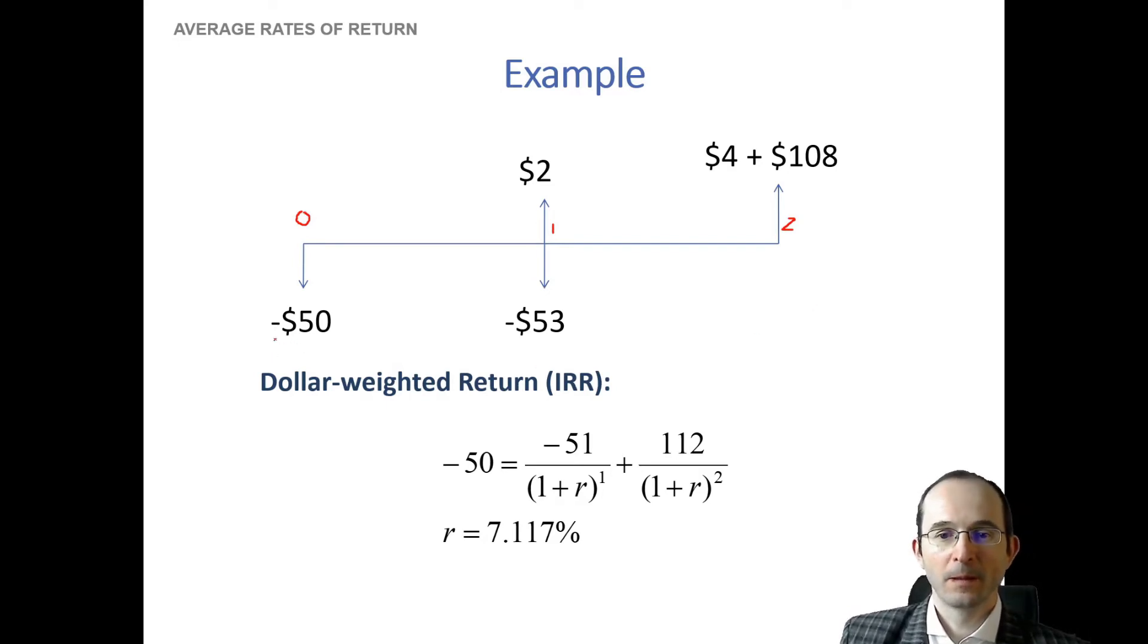Well in year zero, we invested $50. In year one, well we invested $53, but we made two, so our net investment is $51. So whereas for year zero we'd write a cash flow of negative 50, for year one we'd write a cash flow of negative 51. And then finally, what is our cash flow in year two? Well, we made $108 in capital returns from selling those two shares, and we made $4 in dividends, therefore a total of $112.